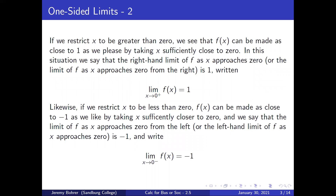If we restrict x to be greater than 0, we see that f(x) can be made as close to 1 as we please by taking x sufficiently close to 0. In this situation, we say that the right-hand limit of f as x approaches 0, or the limit as x approaches 0 from the right, is 1. Written: the limit as x approaches 0 from above of f(x) equals 1.